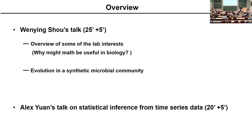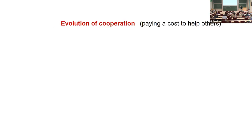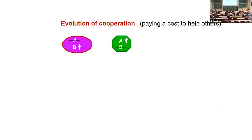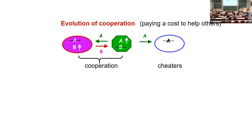And now we'll discuss evolution in a synthetic microbial community. We are interested in evolution of cooperation — the act of paying a cost to help others. For example, the first species cannot make A but pays a cost to overproduce B, and the second species cannot make B but overproduces A. The overproduced compounds are released into the environment, allowing the two strains to cooperate.